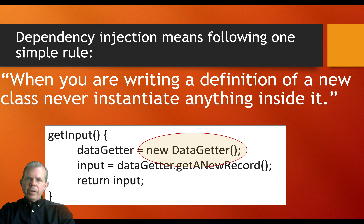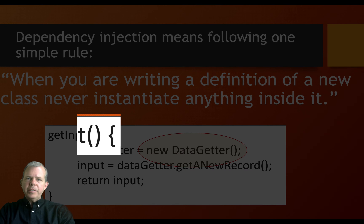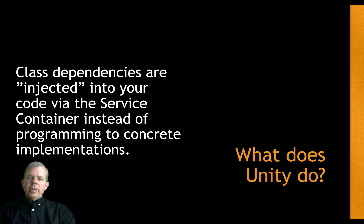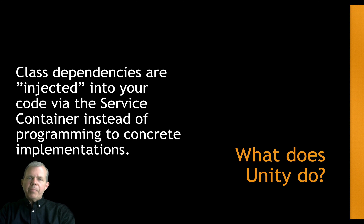One way to get rid of tight coupling is to pass in DataGetter as a parameter in the parentheses. However, we're going to show you in this video how to use the Unity Framework for Dependency Injection. Unity and other injection frameworks take the dependencies you're trying to use inside a class and inject them into something called a service container. The container idea is common to injection frameworks — we don't want concrete implementations but simply references to them that are bound together at runtime.